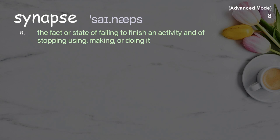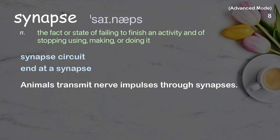Synapse. The fact or state of failing to finish an activity and of stopping using, making, or doing it. Examples: Synapse circuit. Add a synapse. Animals transmit nerve impulses to synapses.